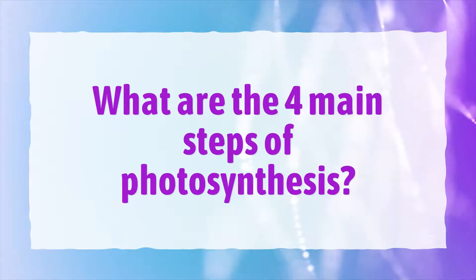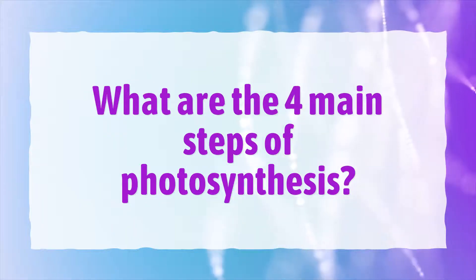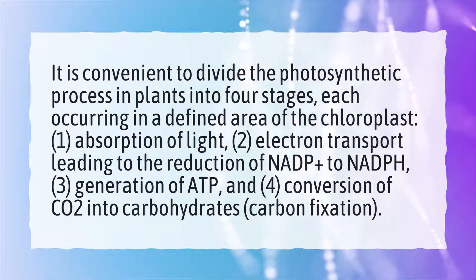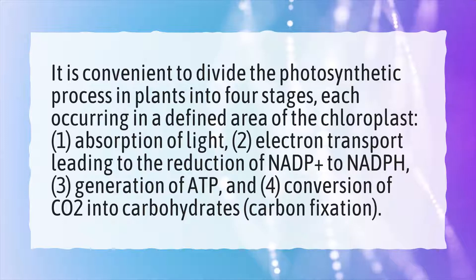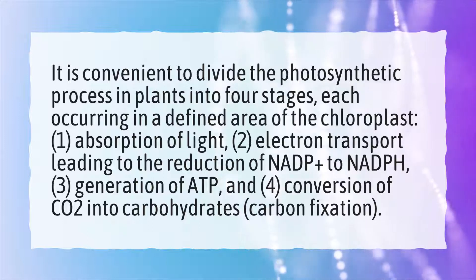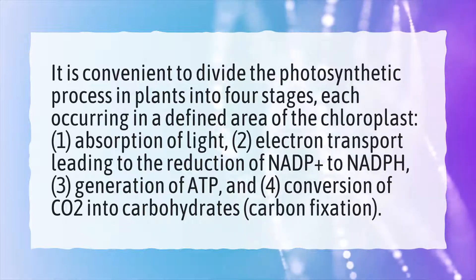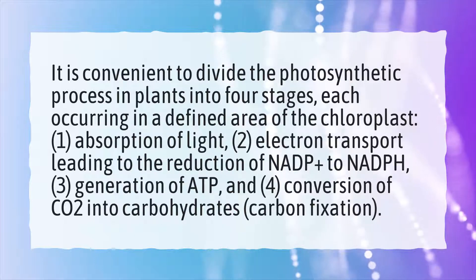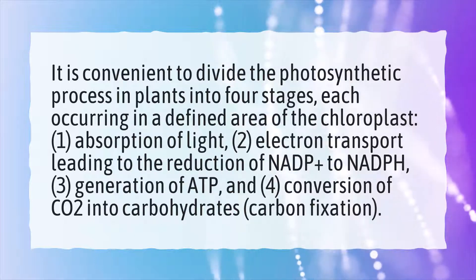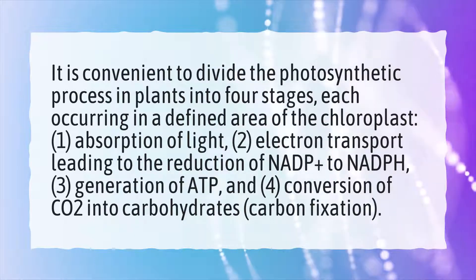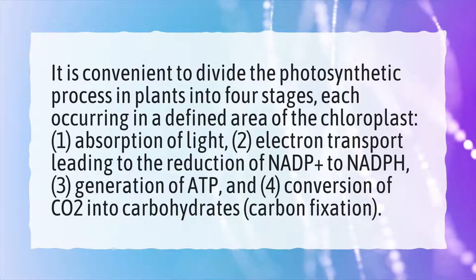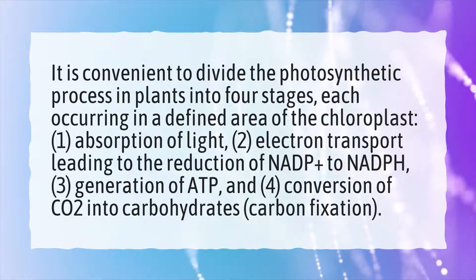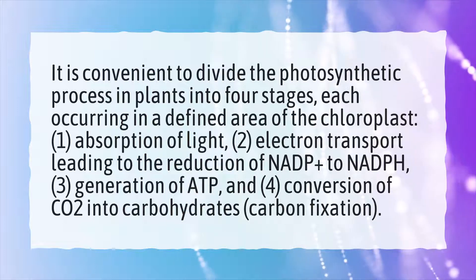What Are The Four Main Steps Of Photosynthesis? It is convenient to divide the photosynthetic process in plants into four stages, each occurring in a defined area of the chloroplast: 1. Absorption of light. 2. Electron transport leading to the reduction of NADP+ to NADPH. 3. Generation of ATP. And 4. Conversion of CO2 into carbohydrates — carbon fixation.